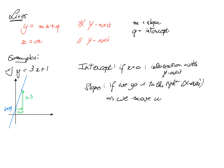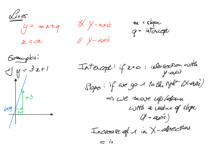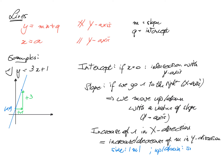We move up or down depending on the sign: if it is positive we move up, if it is negative we move down. For an increase of 1 in the x-direction, we have a change corresponding to an increase or decrease of m in the y-direction. The size of the increase corresponds to the absolute value of m, and whether it is up or down will depend on the sign of m.